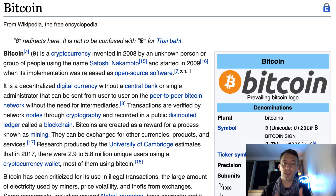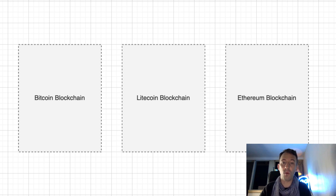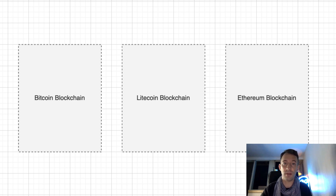The first cryptocurrency that was created was Bitcoin. That's also the cryptocurrency that created the blockchain technology. Other cryptocurrencies like Litecoin or Ethereum each have their own separate blockchain. For example, if you transfer one Bitcoin on the Bitcoin blockchain, it has absolutely no effect on the Ethereum blockchain.